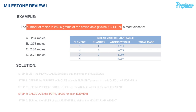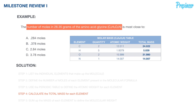Now we calculate the total mass for each element. Carbon: two moles × 12.011 = 24.022. Hydrogen: five moles × 1.0079 = 5.039. Oxygen: two moles × 15.999 = 31.980. Nitrogen: one mole × 14.007 = 14.007.